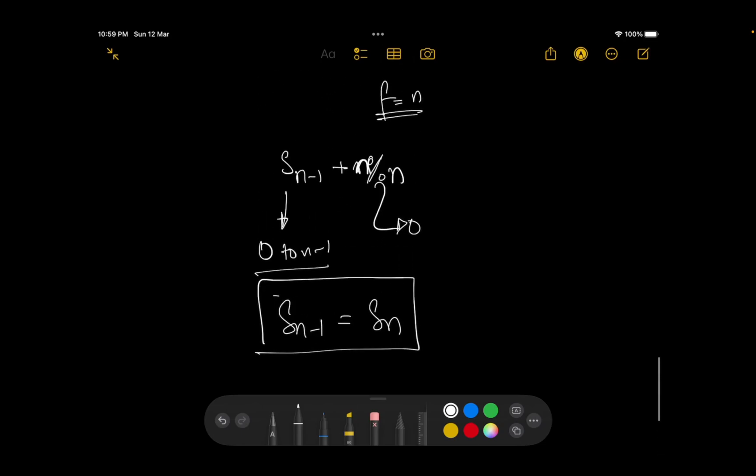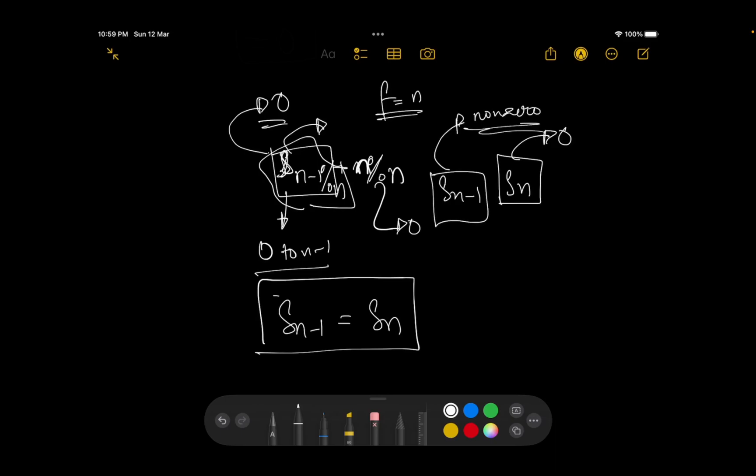But wait, S of n minus 1 itself could have some different values as well. So S of n minus 1 modulus n need not necessarily be 0. So I cannot say that if I am reaching my S of n minus 1 and then I reach my S of n, although this value would be 0, this value can be a non-zero as well. So that is not beneficial for me. I cannot make any predictions based on that. What more can I do?